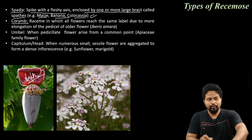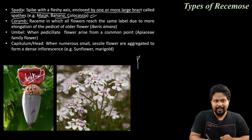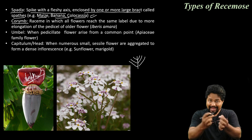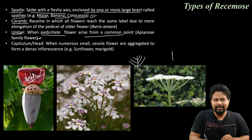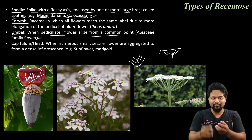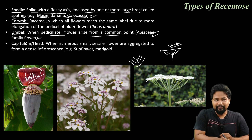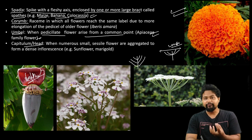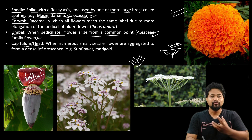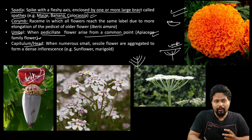Next is corymb — an arrangement of pedicellate flowers where older flowers have longer pedicels so all flowers reach the same level, forming a flat-topped cluster. Umbel is an umbrella-like arrangement where all pedicels arise from a common point. Capitulum or head — for example, sunflower, Zinnia, Marigold — the flowers are arranged on a flat or convex receptacle, forming a head.